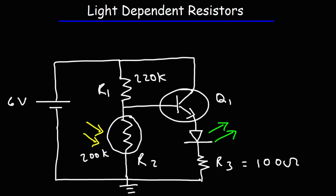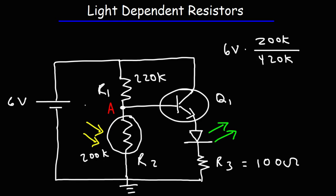R1 and R2 form a voltage divider. To calculate the voltage at point A, it's going to be 6 volts times R2 (200 kilo-ohms) divided by the sum of R1 and R2, which is 420 kilo-ohms. That gives us approximately 2.86 volts — let's round it to 2.9 volts.